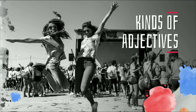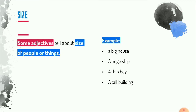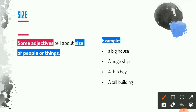Now we have the kinds of adjectives. The first one is adjective of size. Some adjectives tell about the size of people or things. For example: 'a big house,' 'a huge shape,' 'a thin boy,' and 'a tall building.' From these examples, the adjectives are big, huge, thin, and tall, which are located after the determiner and before the noun in each phrase.